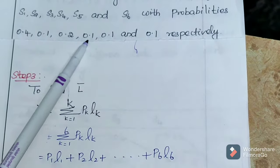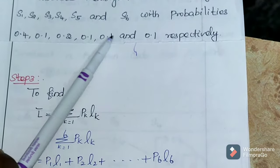Expand: P1 L1 plus P2 L2 plus P3 L3 plus P4 L4 plus P5 L5 plus P6 L6. Substitute the values: 0.4 times 1 plus 0.2 times 2 plus 0.2 times 2 plus 0.1 times 3 plus 0.1 times 3 plus 0.1 times 3. When you simplify, you will get L bar equals 2.4. Then H of S equals 2.32191 bits per symbol.